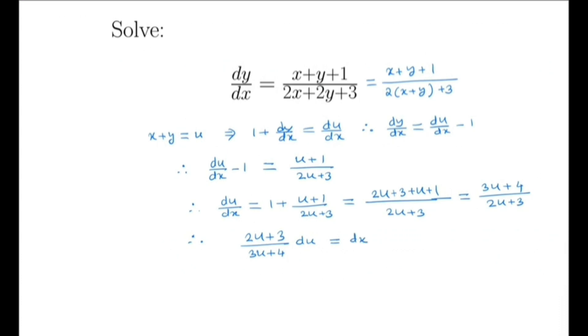Now we need to do a trick here. We need to rewrite this, and it will be 2u plus 8 over 3u plus 4, du equals dx.